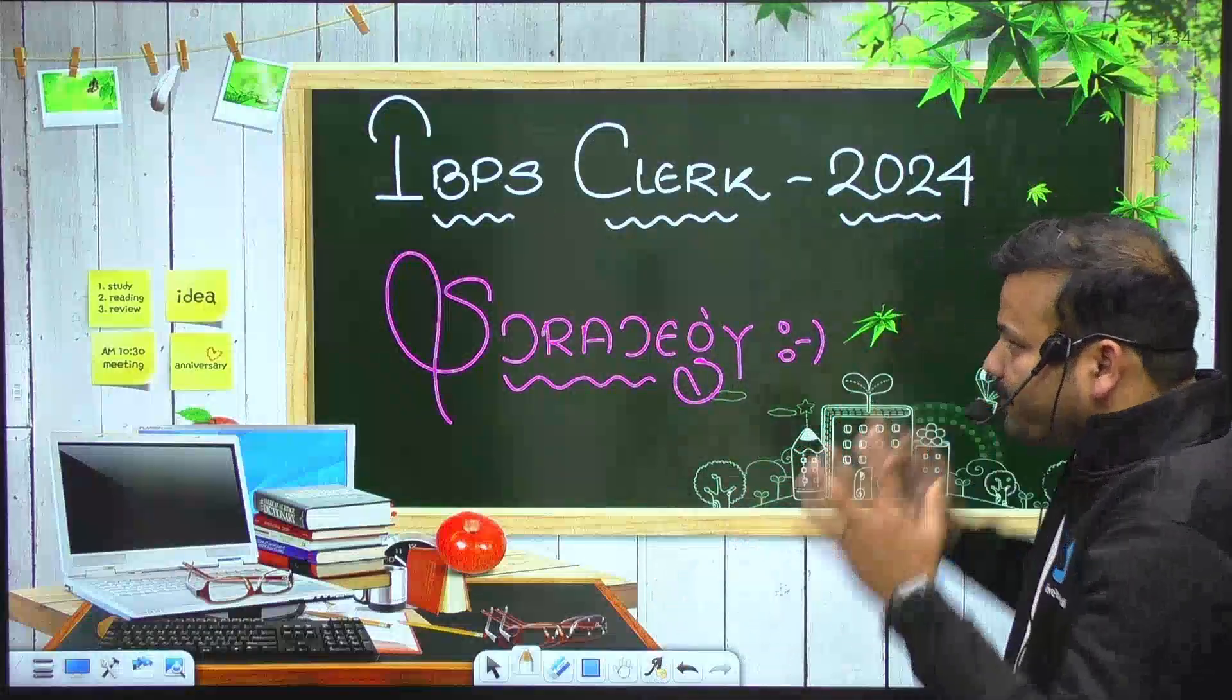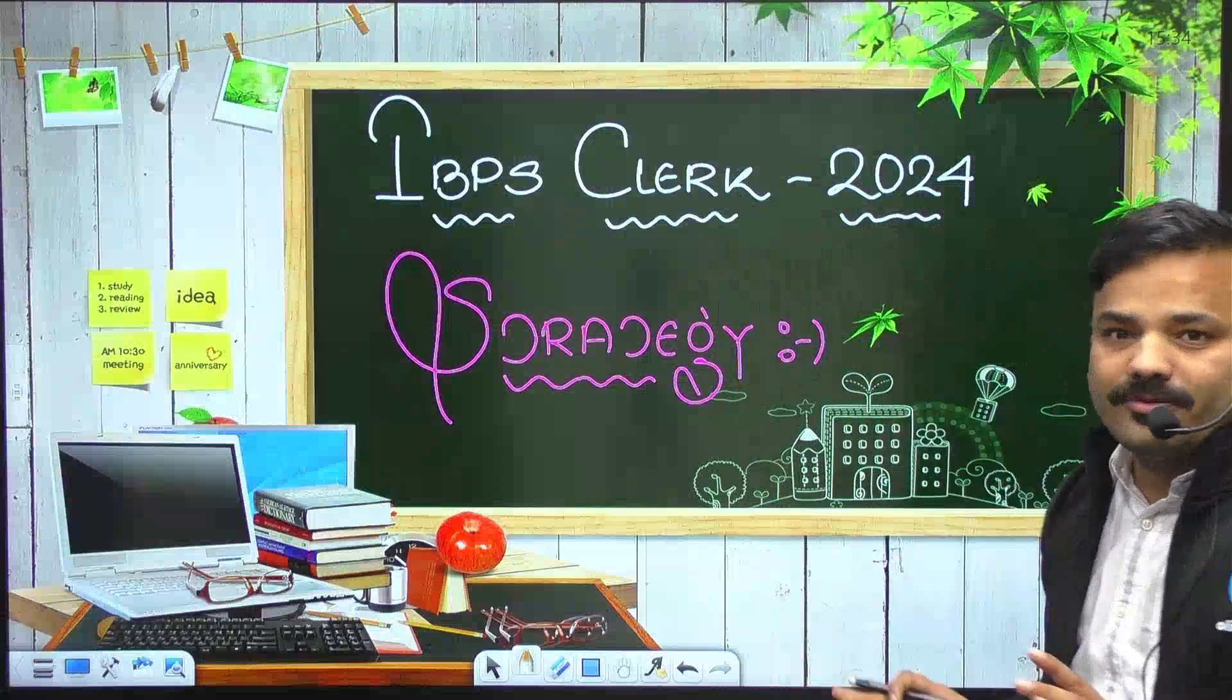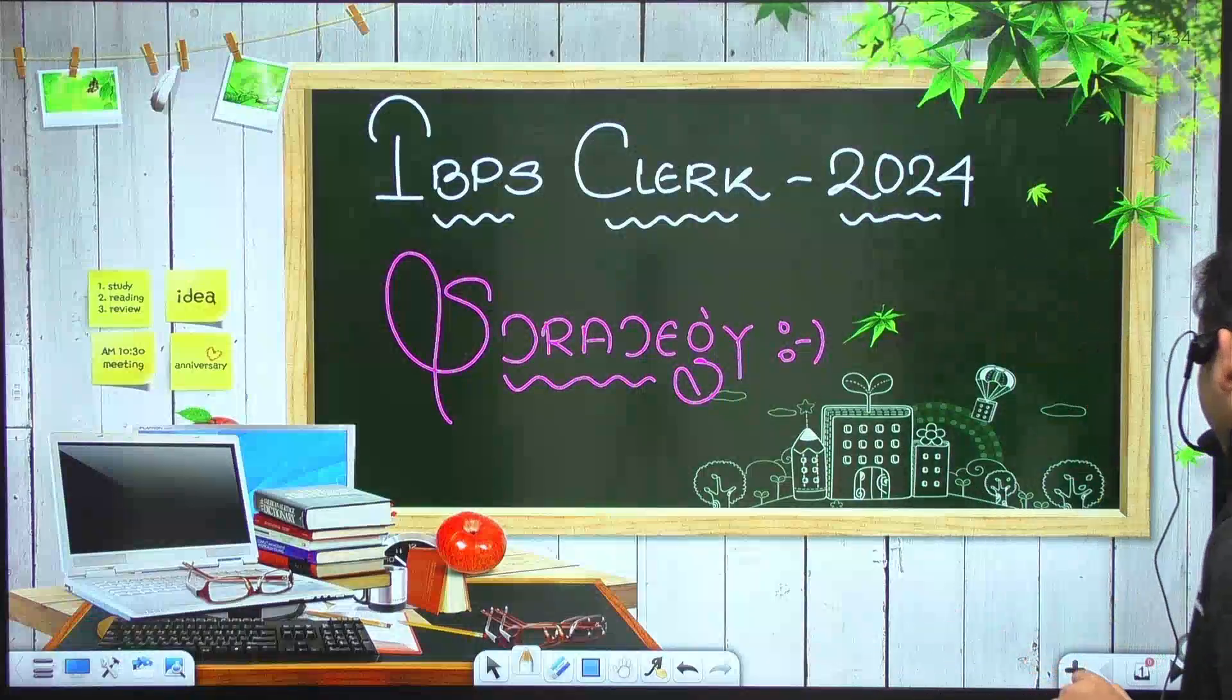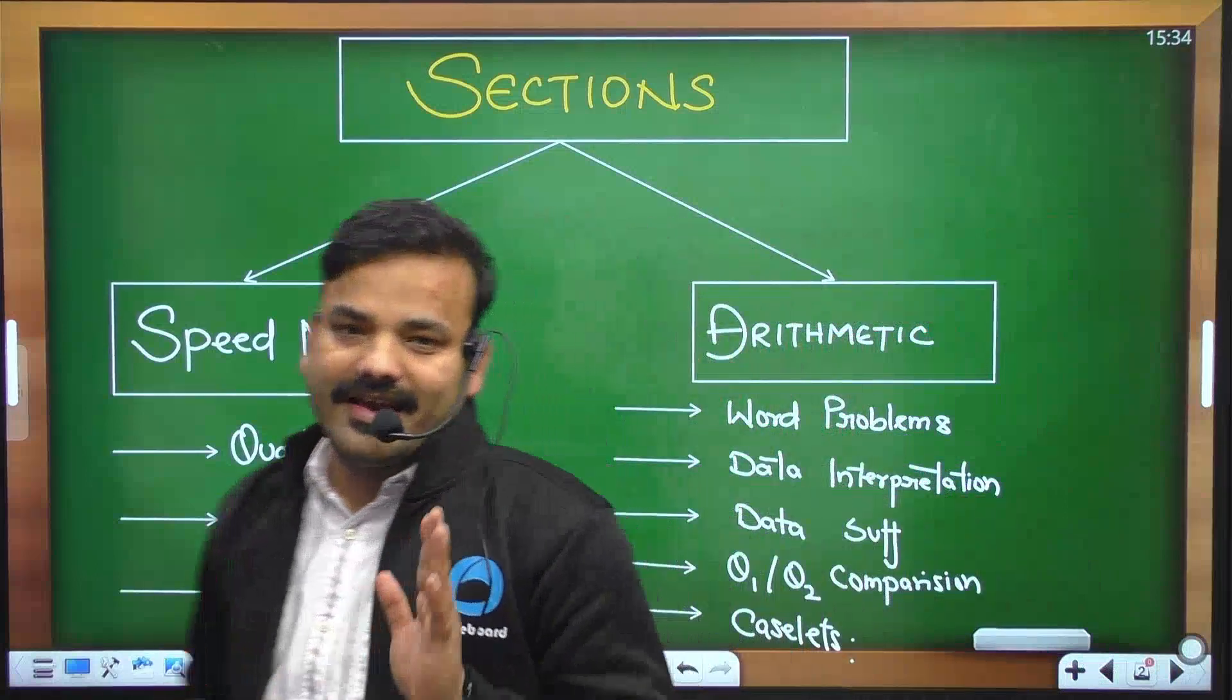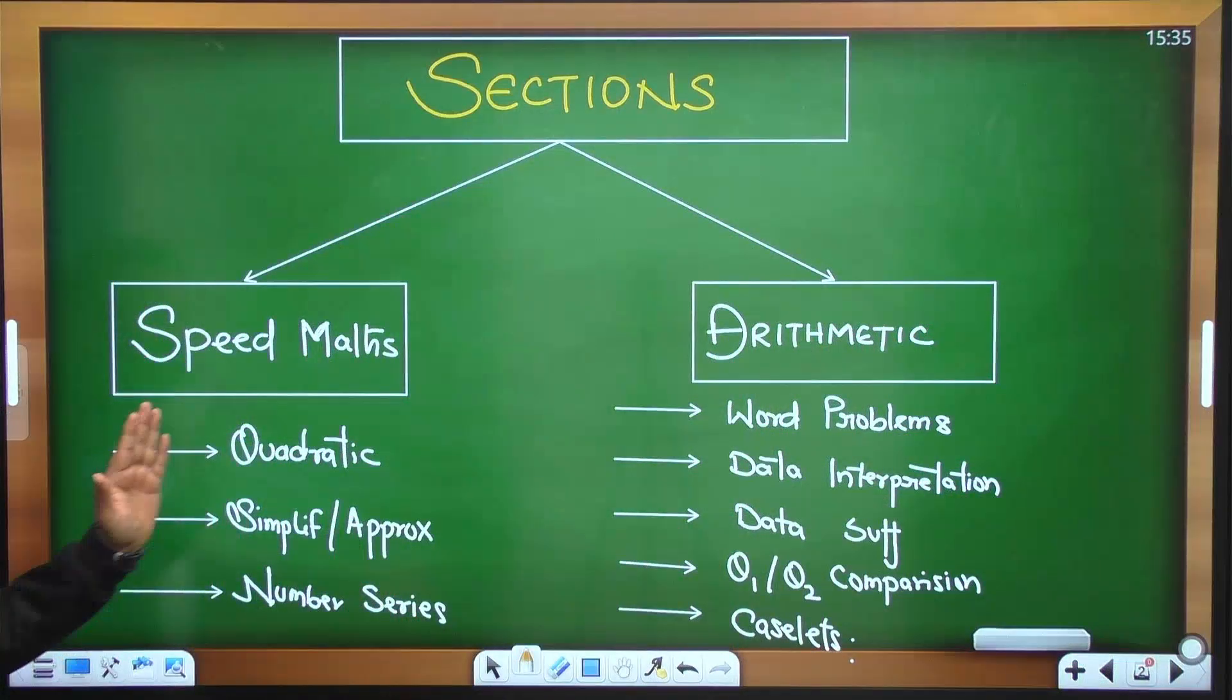But abhi hum to be more precise, IBPS Clerical 2024 ke baare mein baat karenge. Toh generally jo section hote hain, usse do bhago mein hum divide karte hain. Ek section hota aapka speed maths ka, aur ek section hota arithmetic ka.